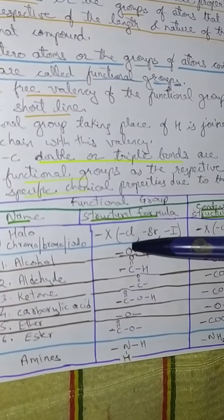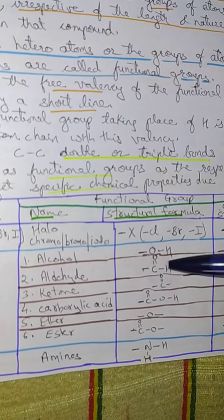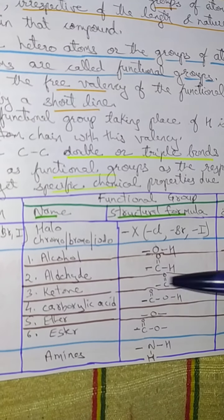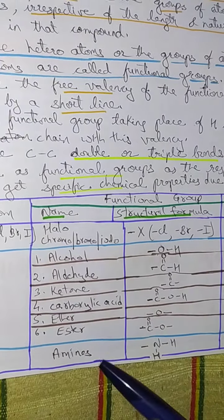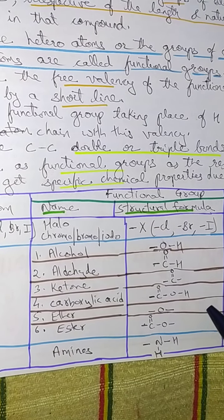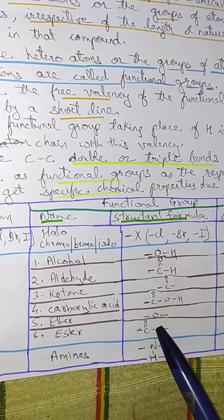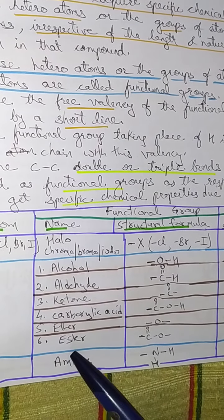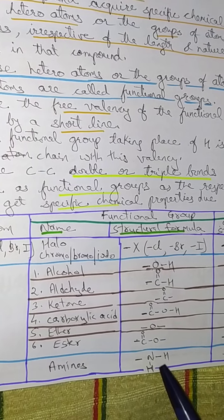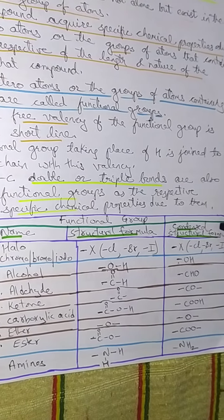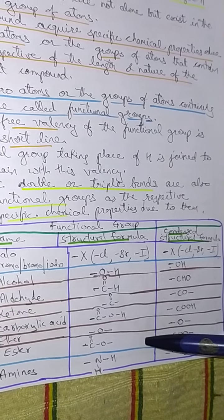If alcohol is present, the OH group is attached. If aldehyde, the CHO group is attached. If ketone, the C=O group is attached. In the case of carboxylic acid, COOH is attached. If ether is present, oxygen is attached between carbon atoms. For ester, COO is attached, and for amines, NH2 is attached. These are the condensed structural formulas for these functional groups.